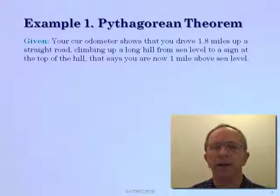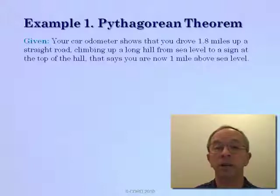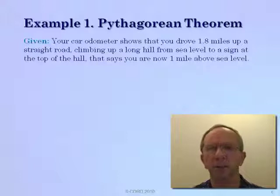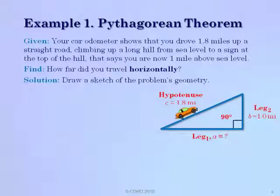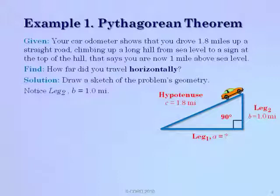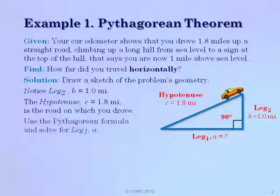Let's look at example one, using the Pythagorean theorem to solve a problem. Your car odometer shows that you drove 1.8 miles up a very straight road, up a long hill, all the way from sea level. At the top of the hill, there's a sign that says you are now one mile above sea level. How far did you travel horizontally in order to get one mile above sea level after driving 1.8 miles? When working on geometry problems, you should always draw a sketch. We drove up the road 1.8 miles and rose 1 mile during that drive. Leg two is 1.0 miles and the hypotenuse C is 1.8 miles. We can use the Pythagorean theorem to solve for A.